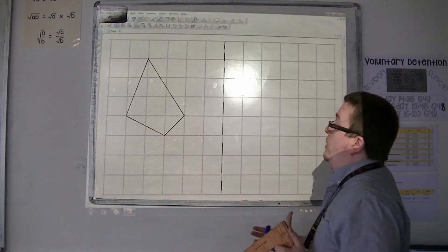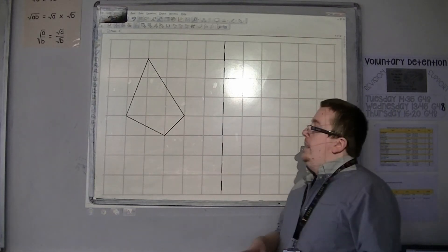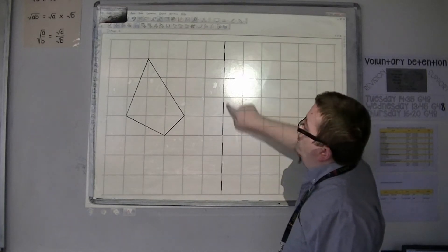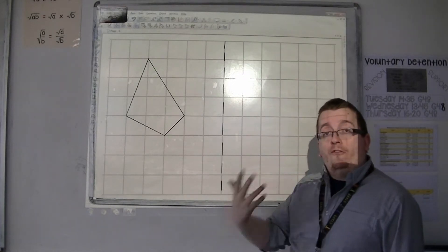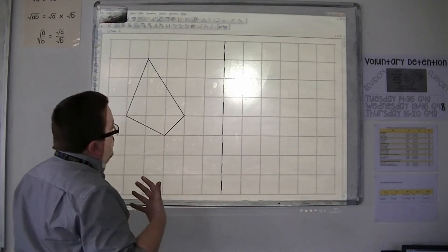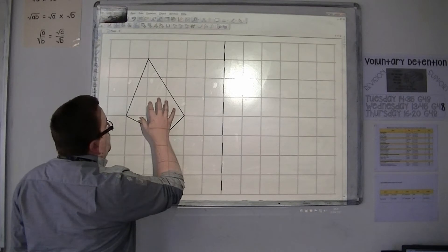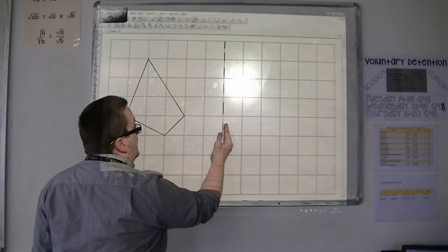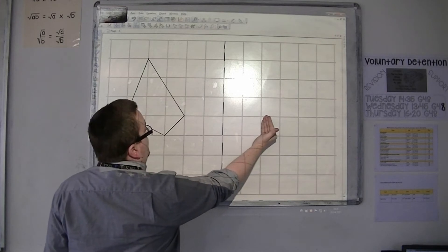So the first type, and the easiest to deal with, is if you have a shape and you've been given a mirror line, and then you're asked to reflect the shape in that mirror line. So, what you might anticipate is that really this shape should be as far away from the mirror line as its reflection should be.